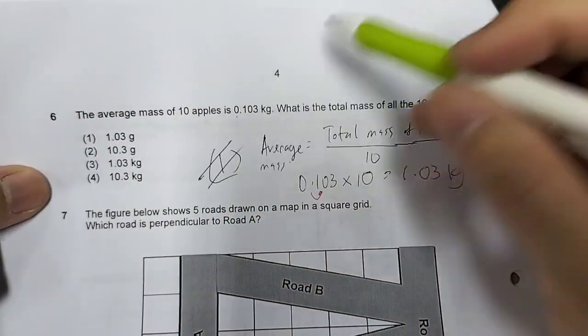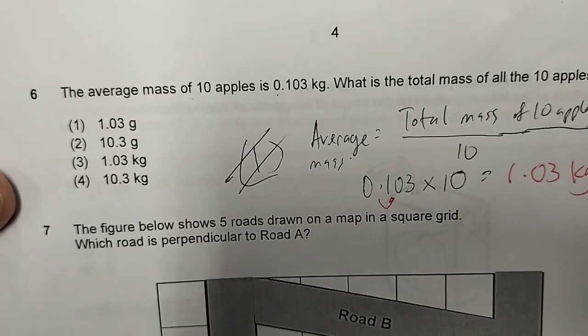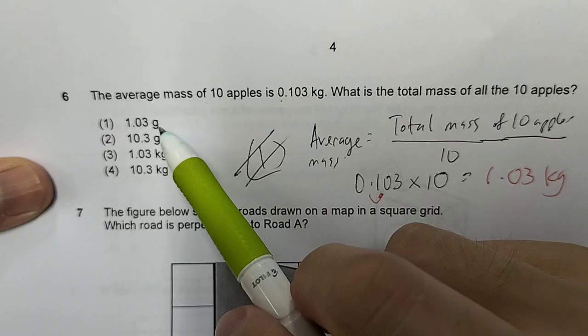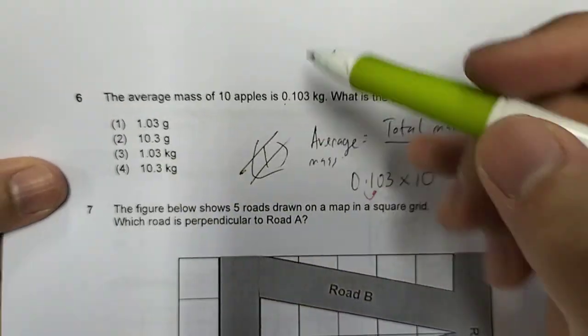Sorry, I almost made a mistake. Can you see my mistake? I almost got caught. This is grams. It's supposed to be kilograms. So sneaky.